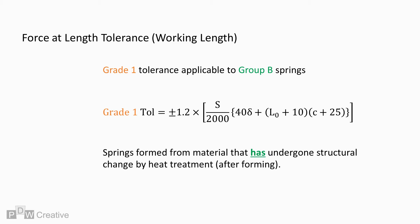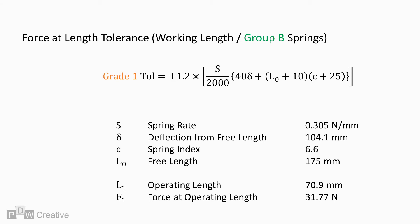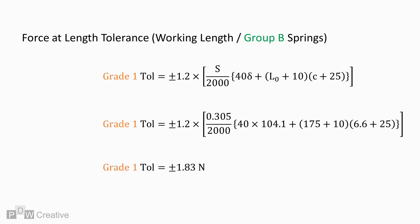For Group B springs, the Grade 1 tolerance calculation is similar to that of Group A springs. A 1.2 multiplication factor is added to make allowance for the heat treatment. If we factor in the variables used in the previous calculation, we can see the differing tolerance increasing from 1.53 to 1.83 newtons for switching groups to this Grade 1, Group B spring.